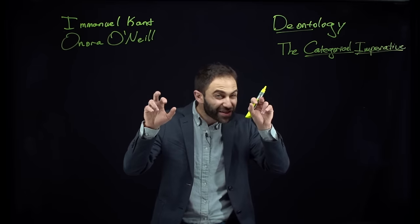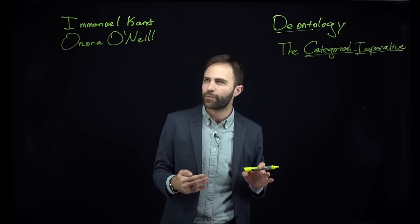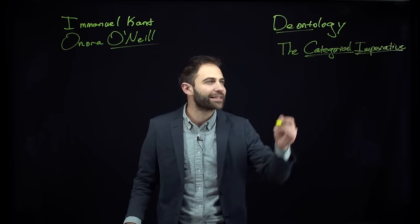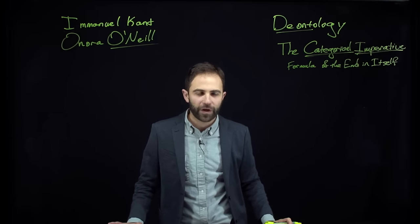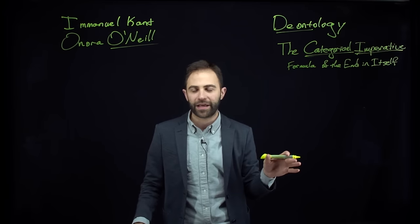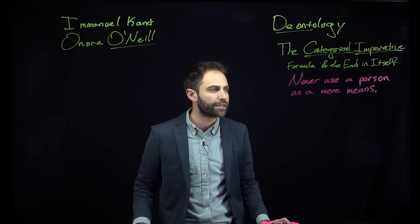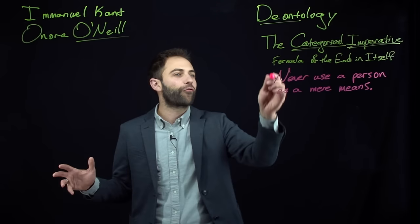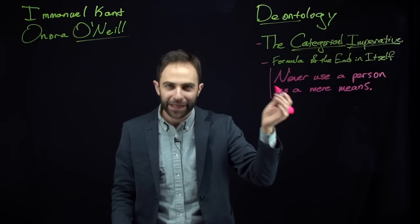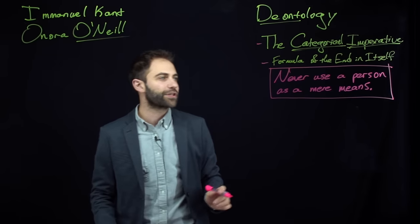There are all sorts of different formulations of the categorical imperative, and these formulations are actually not equivalent to one another, although they're supposed to be. O'Neill focuses on one of these formulations, and that is the formula of the end in itself. We're going to get to Kant's own way of phrasing this formula in a minute, but the very simple way to put it is this: never use a person as a mere means. That's my statement of the formula of the end in itself, which is a version of the categorical imperative.